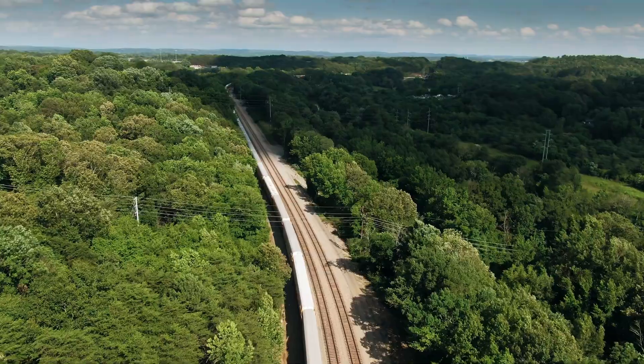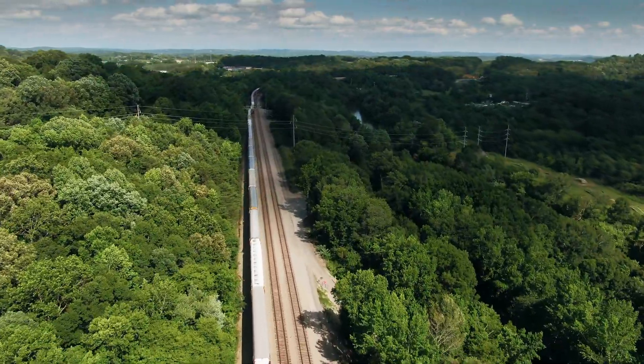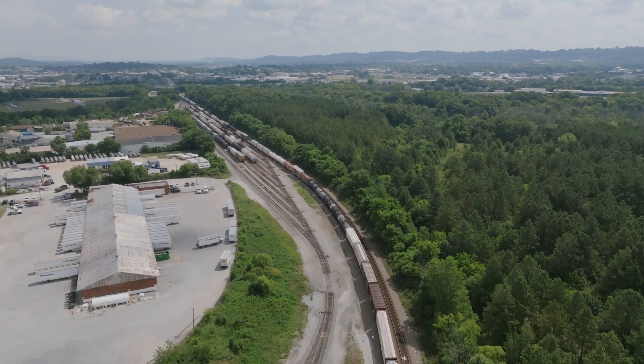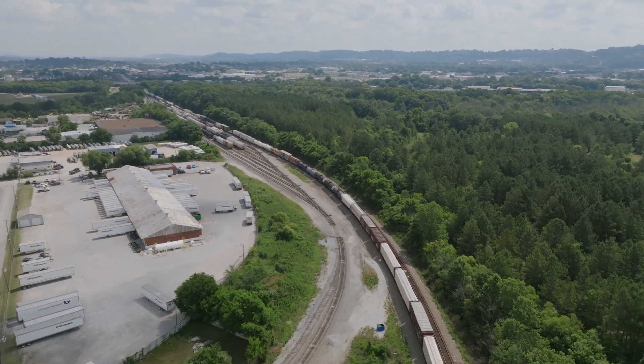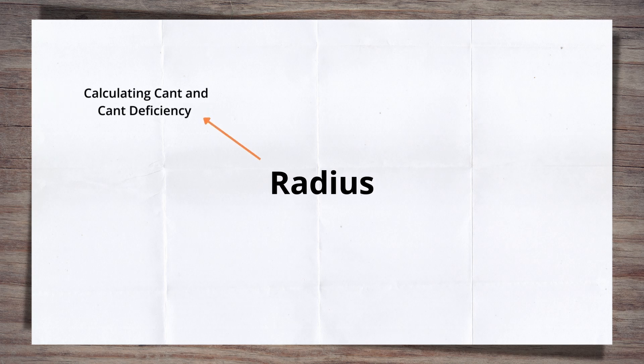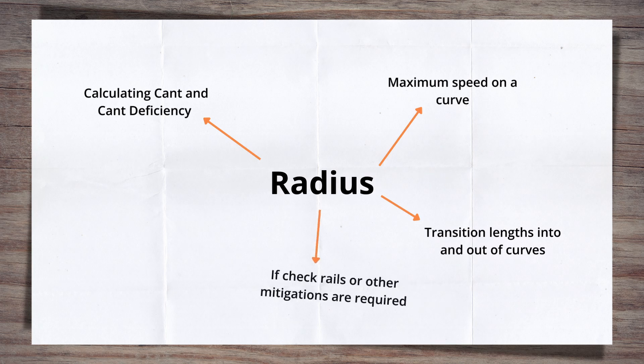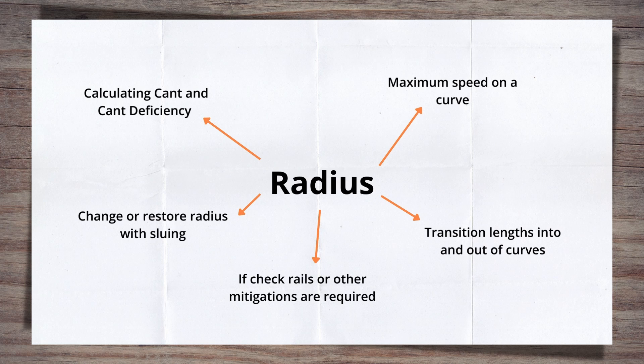Let's take a step back. Curves are the way the track changes direction in the horizontal plane. They allow the direction of the track to be changed to avoid obstacles or to reach a destination. The radius of a curve is its key attribute. As a track engineer, you'll need to know it for calculating cant and cant deficiency, working out the maximum speed a train can travel on a curve, working out transition lengths into and out of a curve, determining if check rails are required or other mitigations of derailment risk, and also you can change or restore the curve radius with slewing.